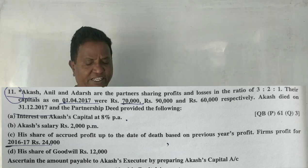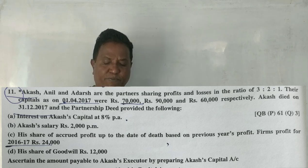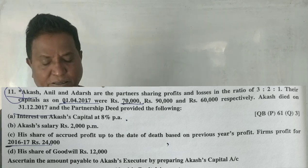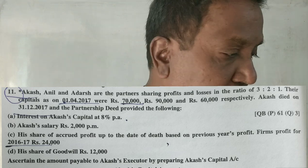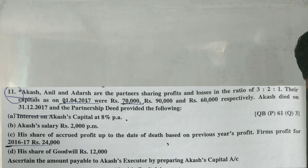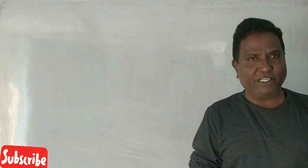His share of goodwill is 12,000. This is not an existing asset — it needs to be adjusted. We will now prepare Aakash's capital account, which will be transferred to the Aakash Executor's account.